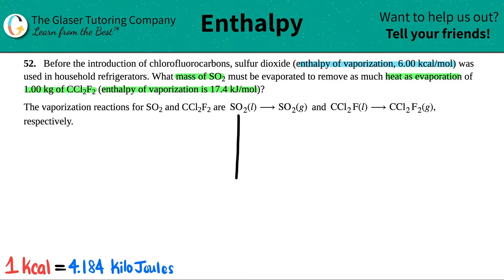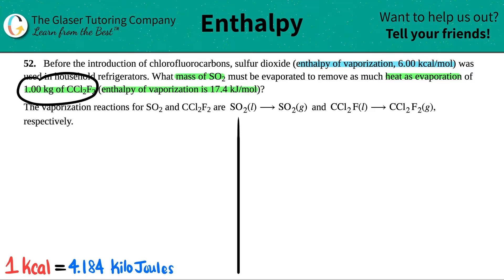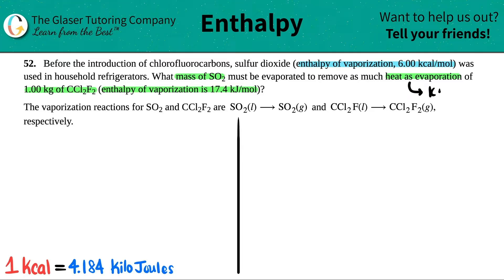We're going to set this equation up into two parts. They're asking for the mass of SO2 — that's what we need to find. We need to find the mass of SO2 that must be evaporated to remove the same heat as one kilogram of CCl2F2. I can't find the mass of SO2 until I find out how much heat was evaporated from the CCl2F2. So first I have to find out how many kilojoules of heat were released from evaporating one kilogram of CCl2F2.